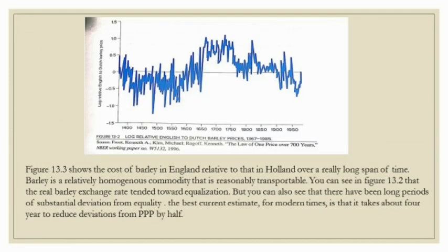As you can see, figure 3 shows the cost of barley in England relative to that in Holland over a very long span of time. Barley is a relatively homogeneous commodity that is reasonably transportable. You can see that the real barley exchange rate trends toward equalization, but there have been long periods of substantial deviation from equality. The best current estimate for modern times is that it takes about 4 years to reduce deviation from PPP by half.